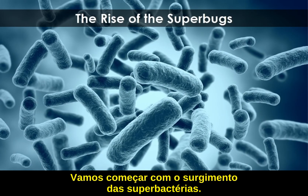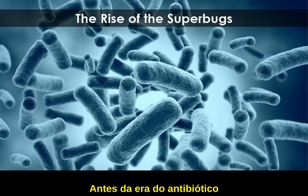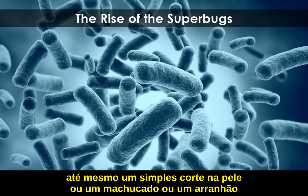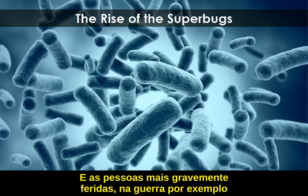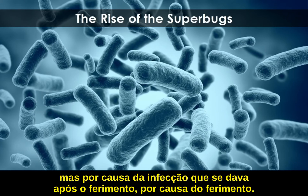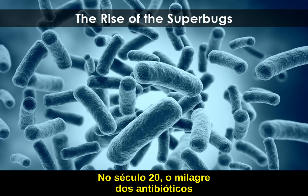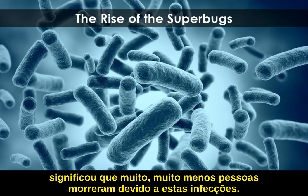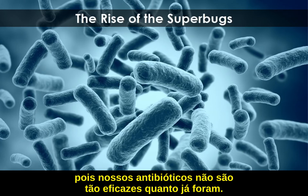Let's begin with the rise of the superbugs — bacteria which are now resistant to our antibiotics. Before the age of the antibiotic, even a simple skin cut or scrape could kill people due to infection. People who were more seriously injured, for example in battle, most of them died not because of their battle wounds but because of infection. In the 20th century, the miracle of antibiotics meant that far fewer people died from these infections, but that miracle is now coming to an end as our antibiotics are no longer as effective as they once were.